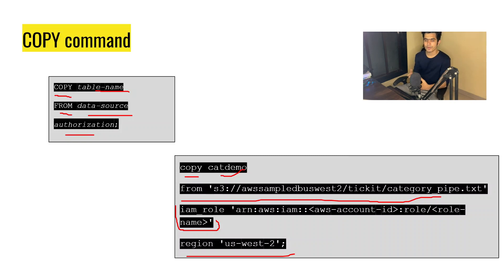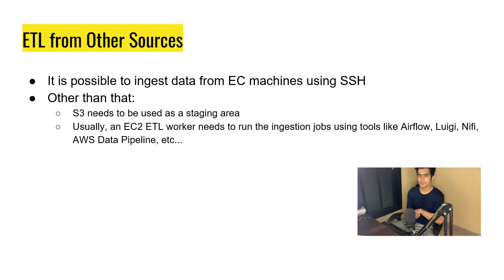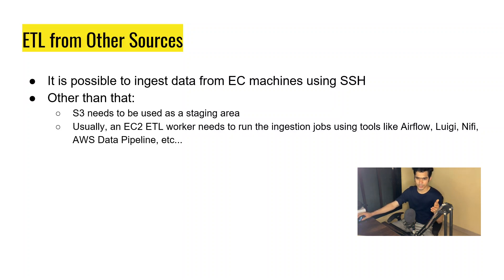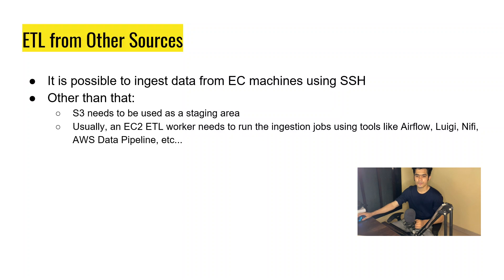Let's talk about doing ETL from other sources. It is possible to ingest data from EC2 using an SSH machine. If you have data stored on EC2 or other servers, you can connect and pull that data. We can also use S3 as a staging server to collect data from different sources into a single bucket. For the ETL itself, you can use anything — Airflow, NiFi, AWS Pipeline, or other services.